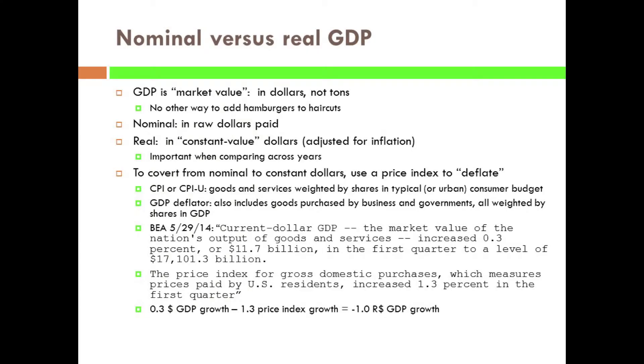An alternative measure that's a little more comprehensive is the GDP deflator, where the weights come from the actual shares in that year's GDP. That includes business purchases of newly produced goods and services and government purchases. There's also something in between called the personal consumption expenditure deflator, which uses the actual weights in GDP but only for the personal consumption part, leaving out business and government.